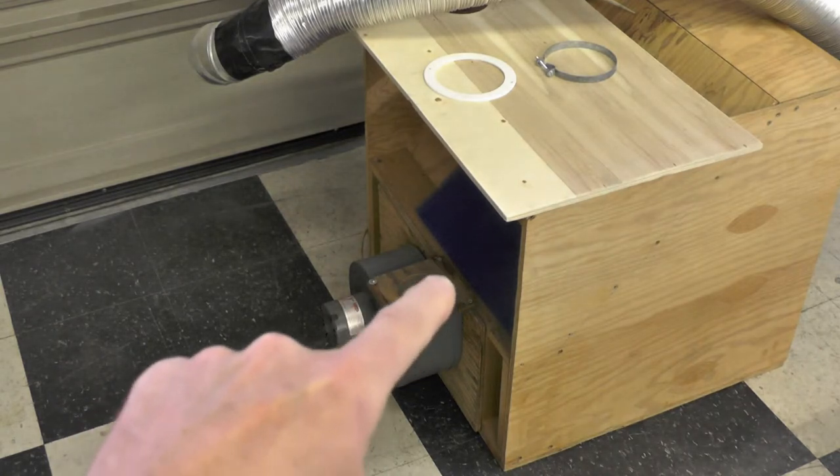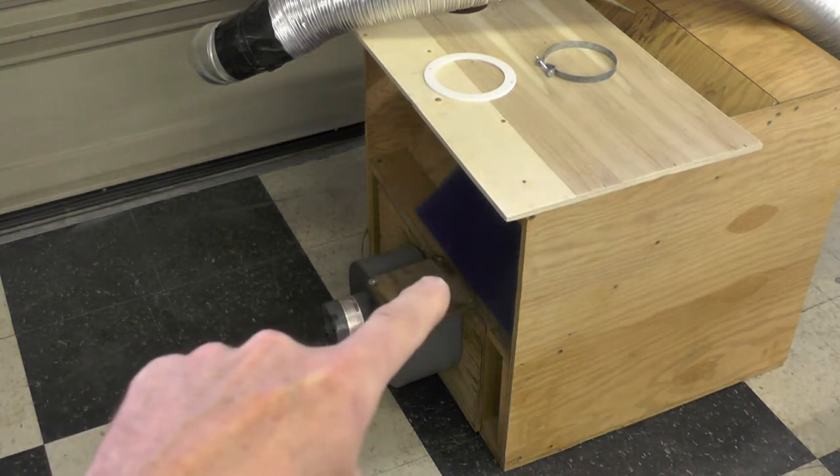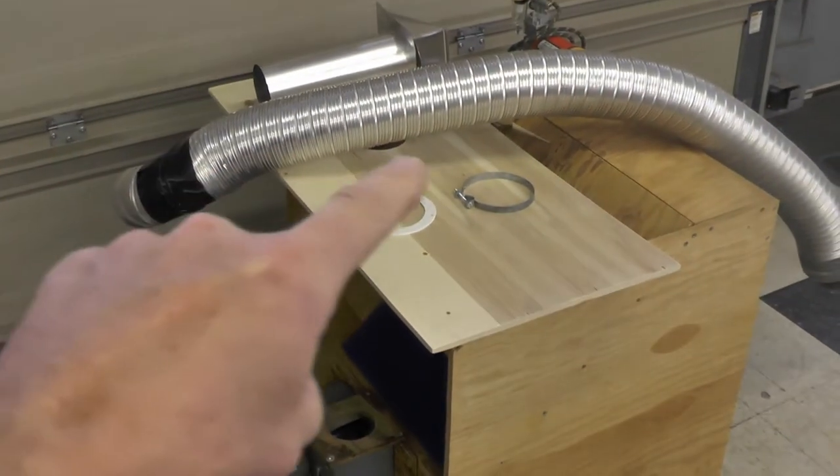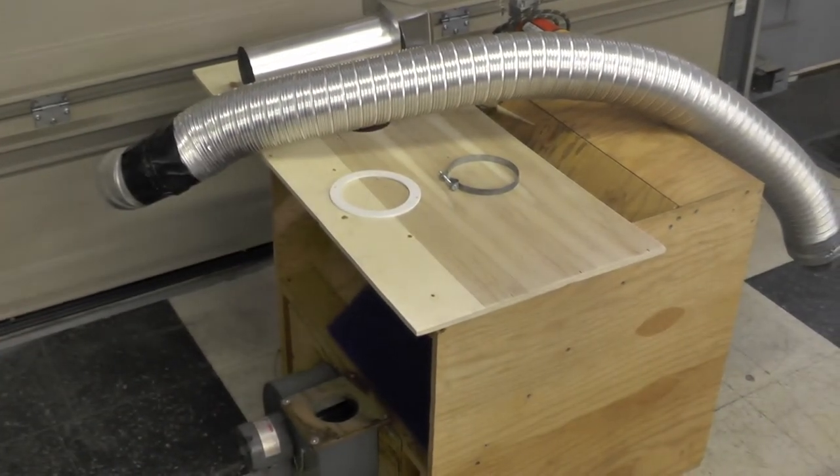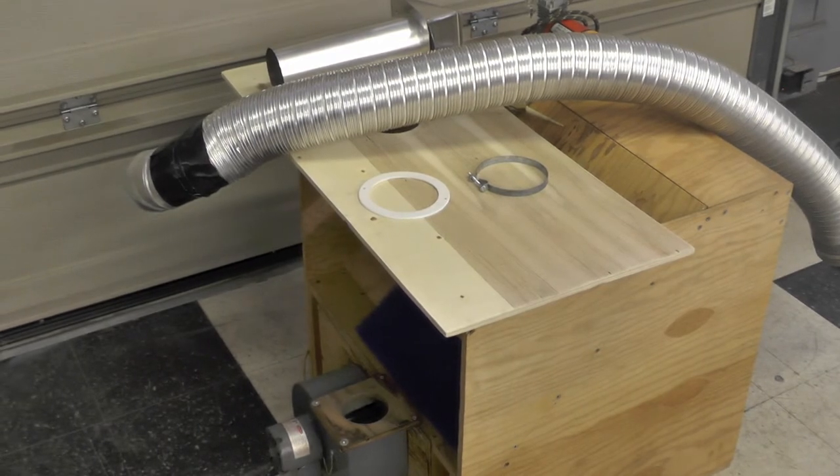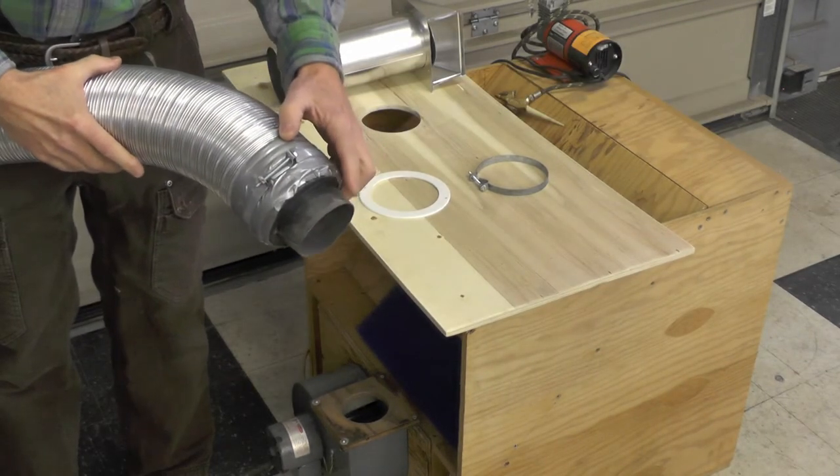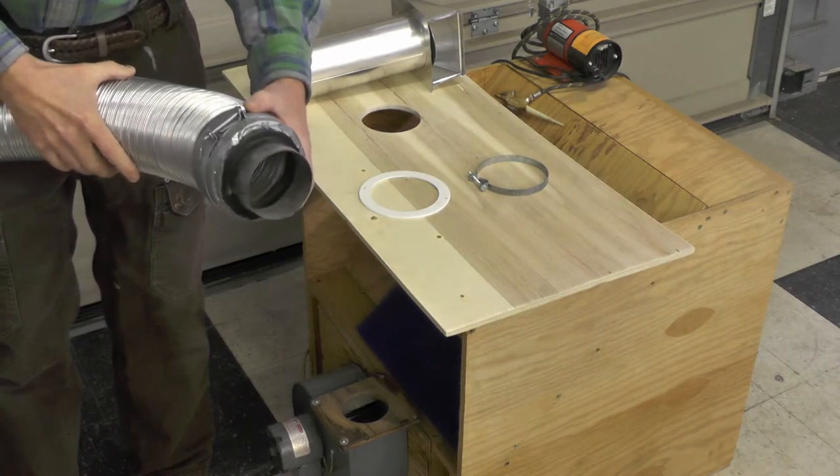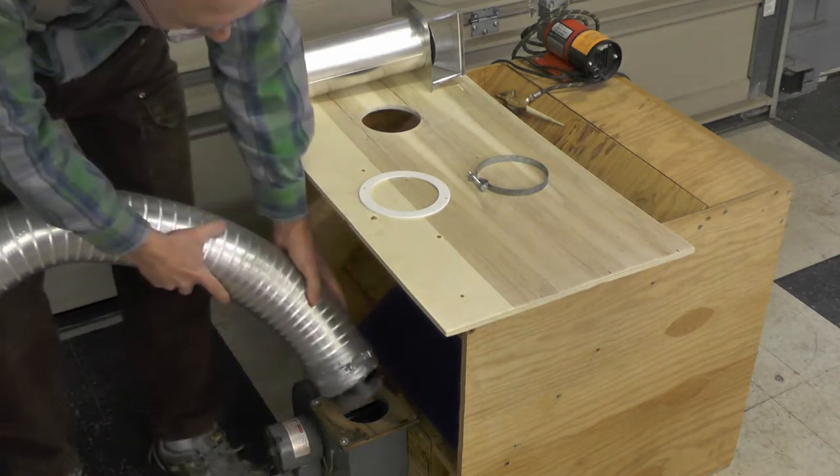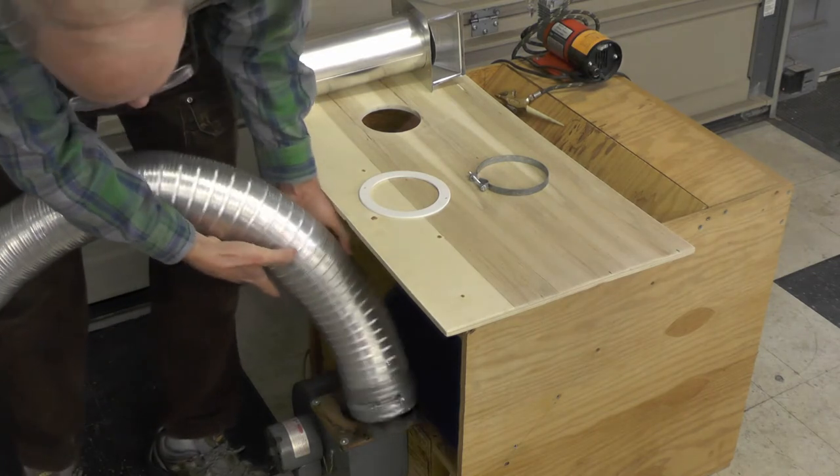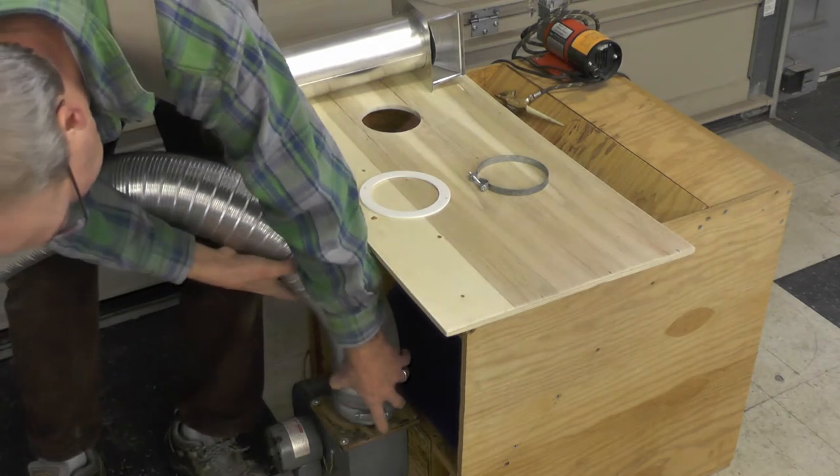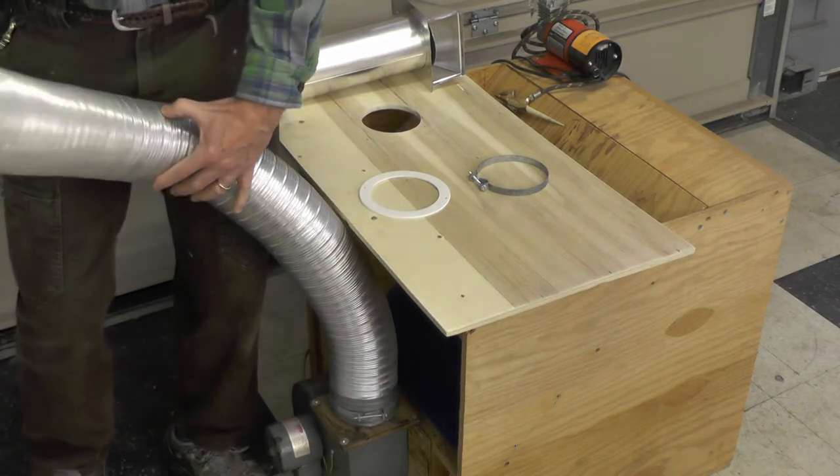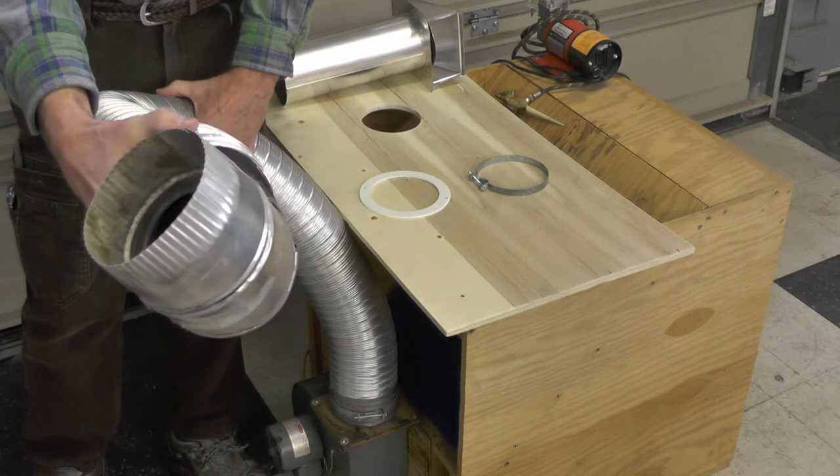The hole you see there is for the exhaust. You can see the exhaust pipe. It fits down in there, and I'll show you exactly how that works. You can see this flange or collar right here that's plastic, and I just got it clamped. I'm going to let it slip fit down like that, and then the other end gets exhausted outside.